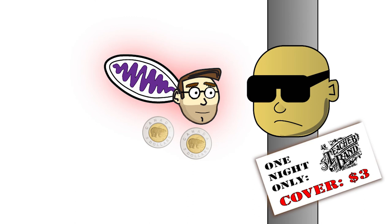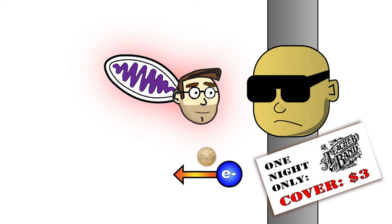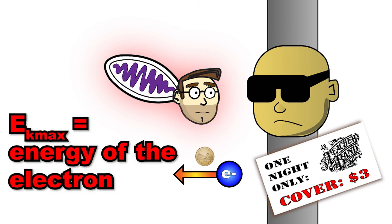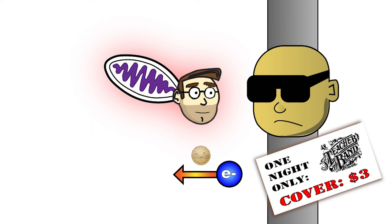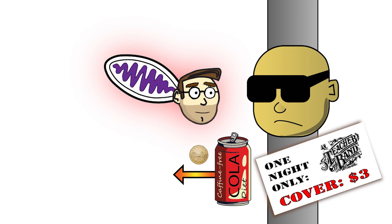If the photon has extra energy, the law of conservation of energy tells us that the extra energy has to go somewhere, so it turns into kinetic energy in the electron, called the EK max. In this analogy, I sort of think of this extra kinetic energy as the change leftover that you use to buy that sweet sweet caffeine-free diet soda.